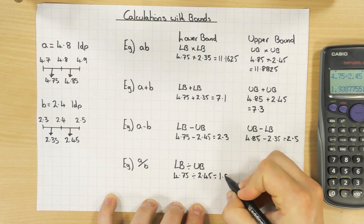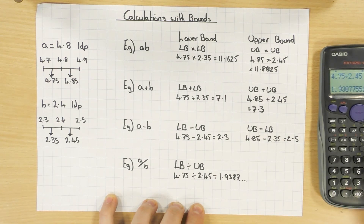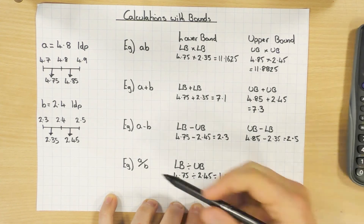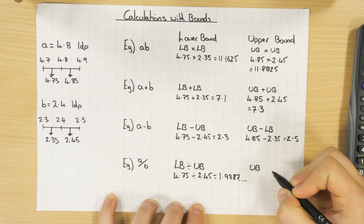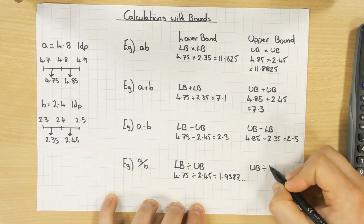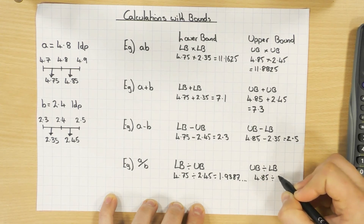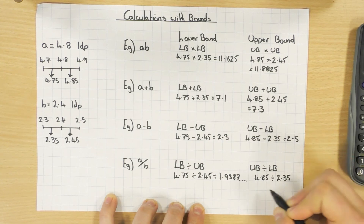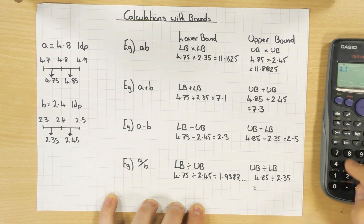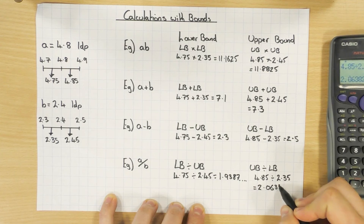4.75 ÷ 2.45 = 1.9387... — a messy number, so round as instructed by the question. For the upper bound of a ÷ b, use upper bound of a divided by lower bound of b: 4.85 ÷ 2.35 = 2.0638... Again, the question may ask you to round in the actual exam.